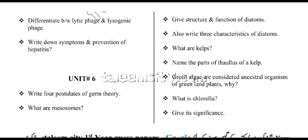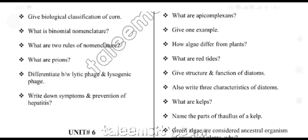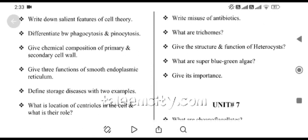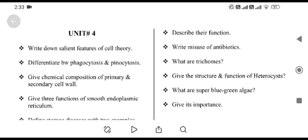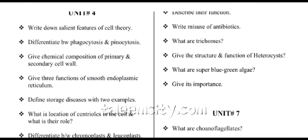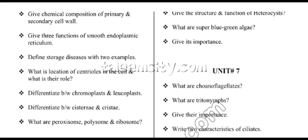From unit number six, we have: four postulates of germ theory; what are mesosomes and their functions; misuse of antibiotics; trichomes; structure and function of heterocyst; what are blue-green algae and their importance.